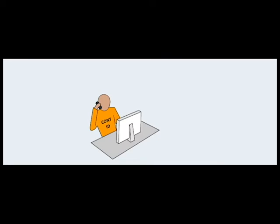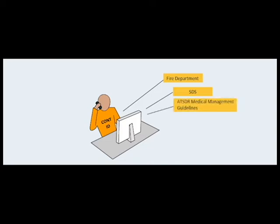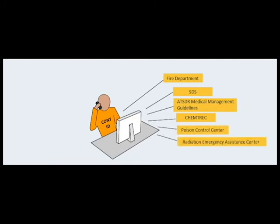Once initial or final confirmation is made, various resources need to be consulted to obtain information on decontamination, personal protective equipment, and anticipated health risks. Informational resources include the local fire department, safety data sheets or SDS, ATSDR Medical Management Guidelines, ChemTREC—the Chemical Transportation Emergency Center which serves as a round-the-clock resource for hazardous materials incidents, Poison Control Center, Radiation Emergency Assistance Center, Online Chemical Databases, and WISER—the Wireless Information System for Emergency Responders. View a full list of resources and contact information in our library.